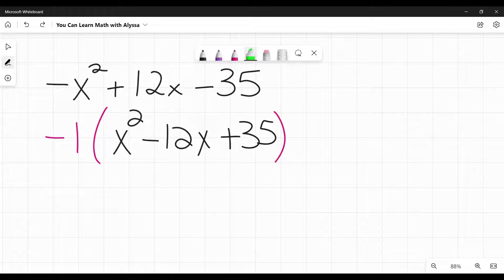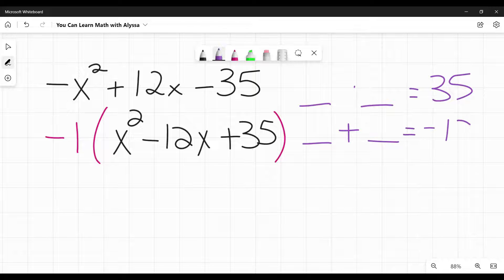So I'm going to look for two terms that multiply to this last term, but add to that negative 12. So they are going to multiply again to a positive 35, but add to a negative 12. Since they need to multiply to a positive, but add to a negative, I know that both numbers must be negative.